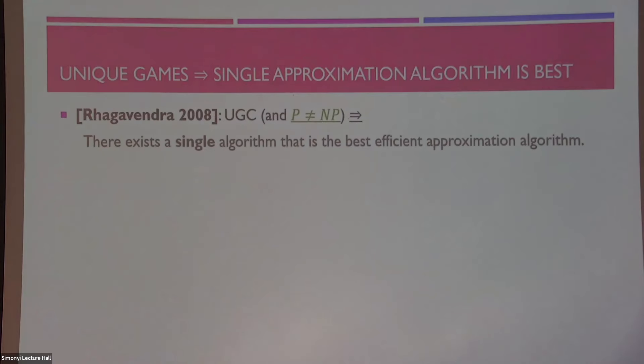then there is one single algorithm that is actually the best efficient approximation algorithm to all the CSP problems at once. I'm kind of sweeping some details here under the rug, but basically Raghavendra shows that for any type of CSP problem we can think about, there is some constant alpha star, so that Raghavendra's algorithm gives us an alpha star approximation algorithm for inputs from that CSP. But for any alpha greater than that alpha star, there is, in fact, no efficient alpha approximation algorithm for that CSP.